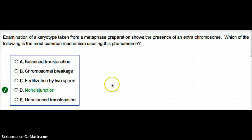This question deals with examination of a karyotype taken from a metaphase preparation shows the presence of an extra chromosome. Which of the following is the most common mechanism causing this phenomenon? Whenever you see an extra chromosome, it means that there is a failure of paired chromosomes to separate.